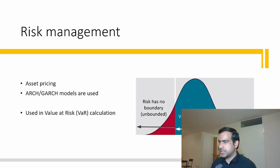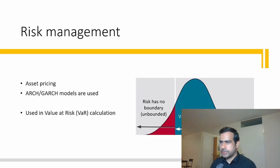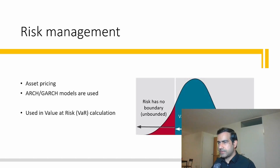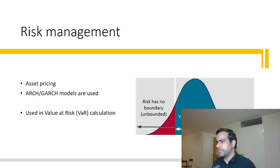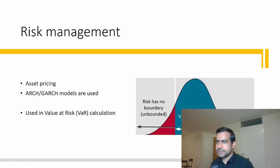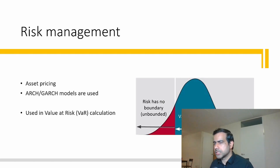Macroeconomic variables like inflation, interest rates, GDP, and unemployment rate are forecasted using time series models such as ARMA, ARIMA, and Vector Autoregression (VAR). Error Correction Models (ECM) are also used — regardless of whether it's specialized research firms or banks performing the analysis.